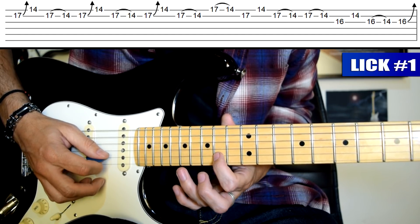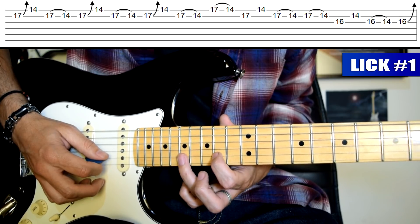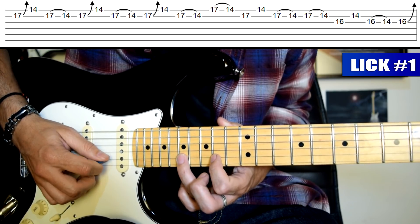Y ahora dedo 3 traste 17 de cuerda 2, dedo 2 traste 14 de cuerda 2, púa abajo en cuerda 2. Y levanto el dedo 3 y hago un ligado. Ahora voy a repetir lo mismo. Llevo el dedo 3 al traste 17, permanezco con el dedo 1 en el traste 14, siempre en cuerda 2, púa abajo en cuerda 2.